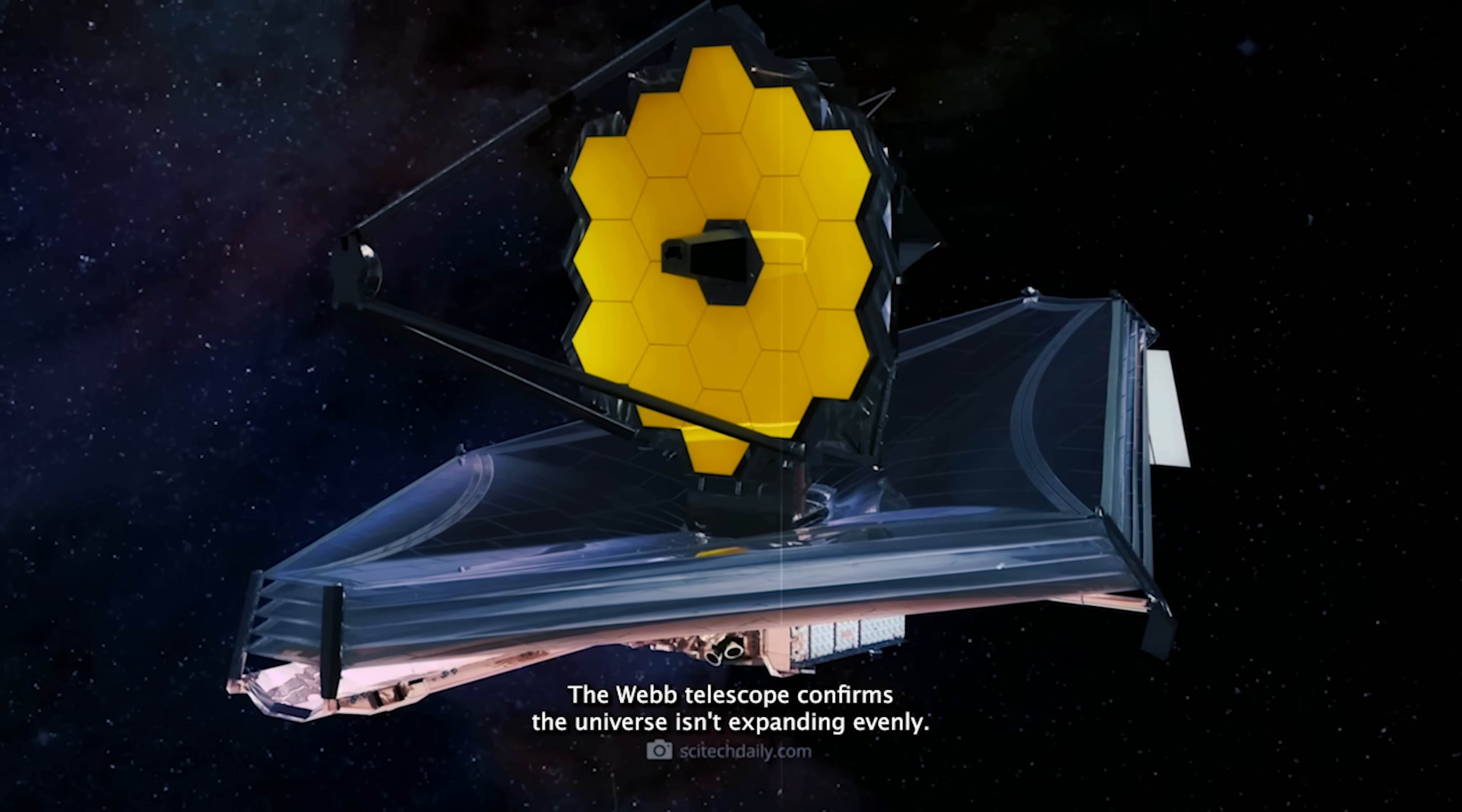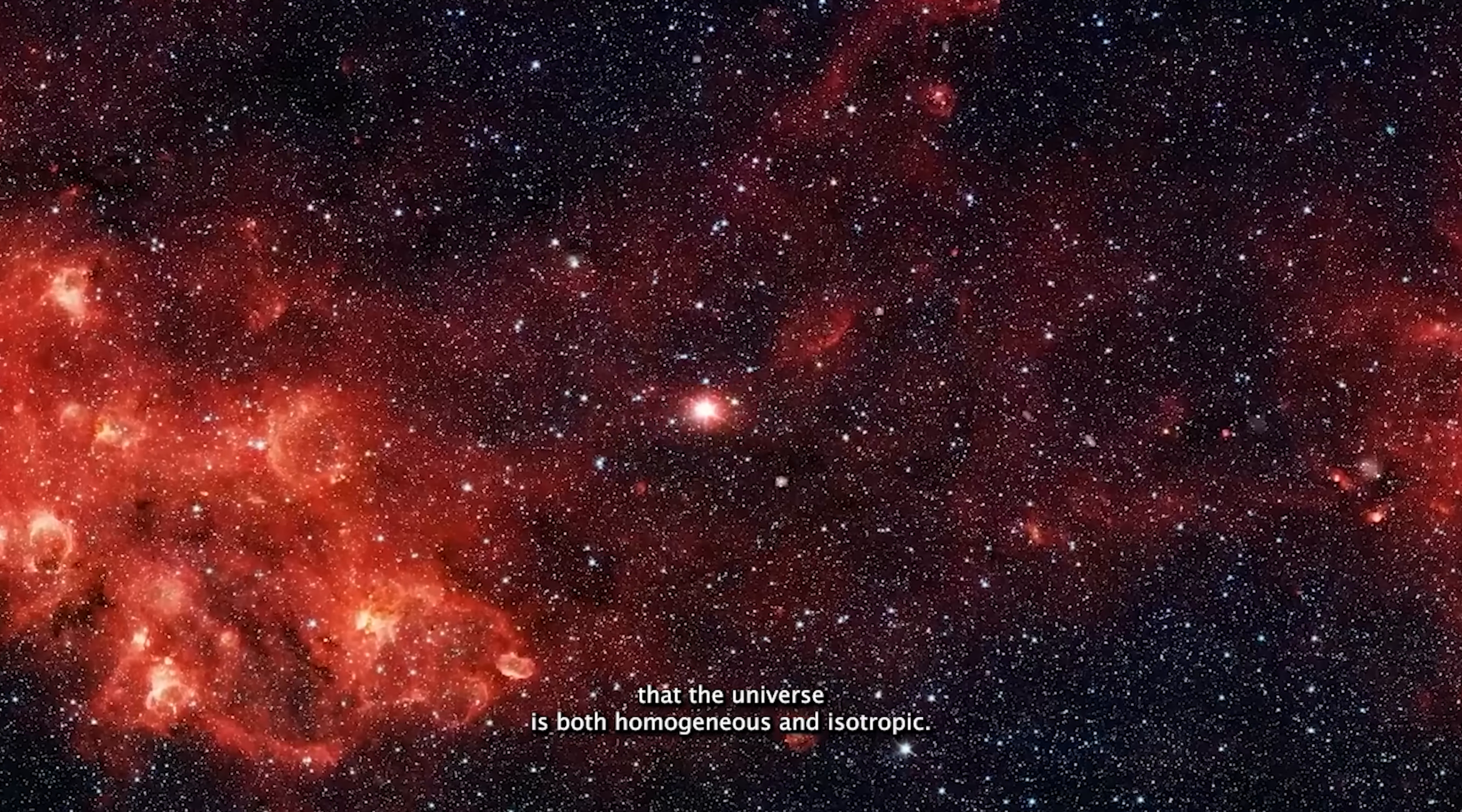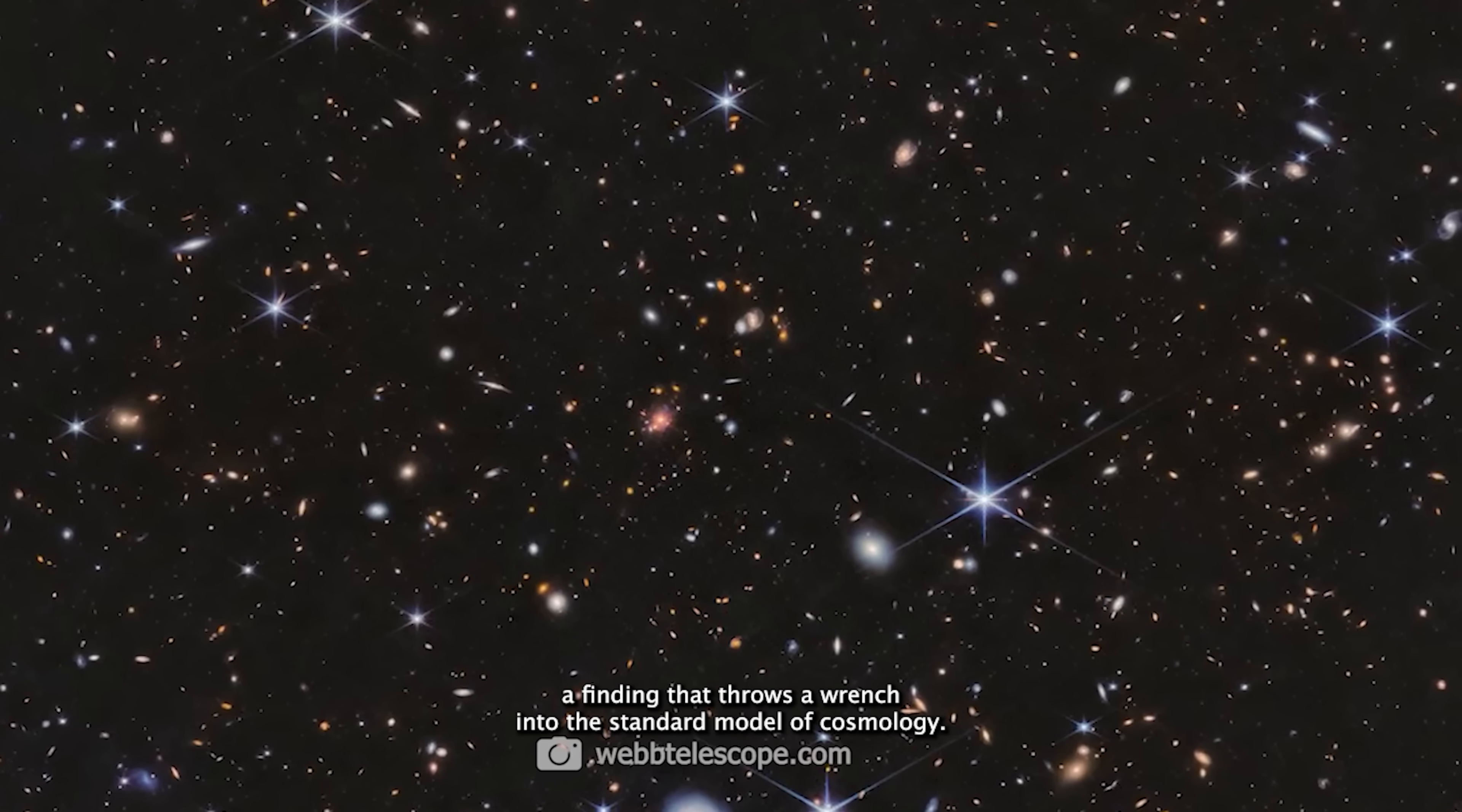The Webb Telescope confirms the universe isn't expanding evenly. For decades, scientists have operated under a key assumption that the universe, on the grandest scales, behaves the same everywhere. This belief, called the cosmological principle, holds that the universe is both homogeneous and isotropic. But now, the Webb Telescope is calling that into question. Recent data suggest that the universe may be expanding at different speeds in different regions, a finding that throws a wrench into the standard model of cosmology.